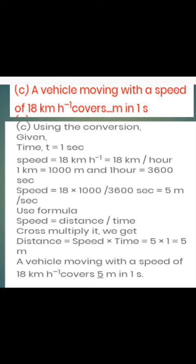A vehicle is moving with a speed of 18 km per hour; it covers how many meters in one second? This means we need to convert km/h to m/s. You should know: 1 kilometer = 1000 meters, and 1 hour = 3600 seconds. Using the formula speed = distance/time, 18 km/h equals 5 meters per second. This is the standard 9th–10th grade km/h to m/s conversion.